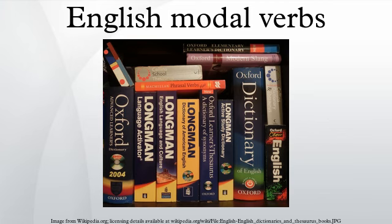Since modal verbs in other Germanic languages are not defective, the problem of double modals does not arise — the second modal verb in such a construction simply takes the infinitive form, as would any non-modal verb in the same position. Compare the following translations of 'I want to be able to dance', all of which translate literally as 'I want can dance' in German: 'ich will können tanzen', and in Swedish: 'jag vill kunna dansa'.